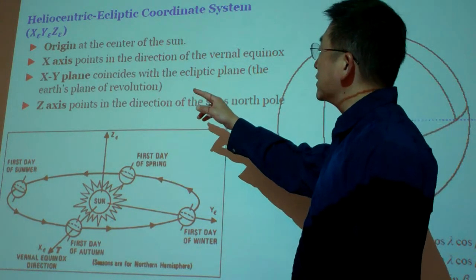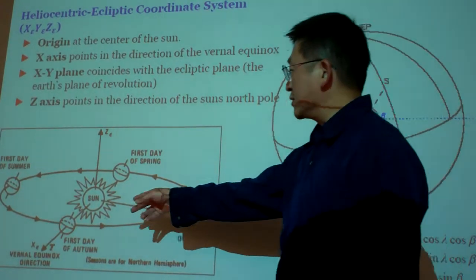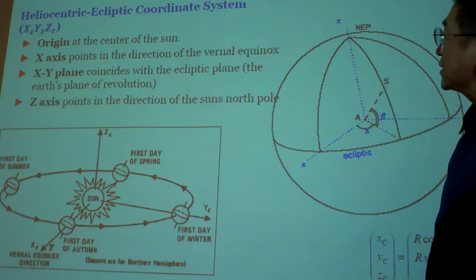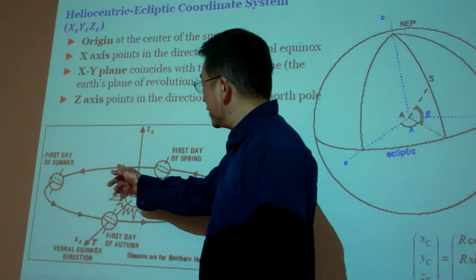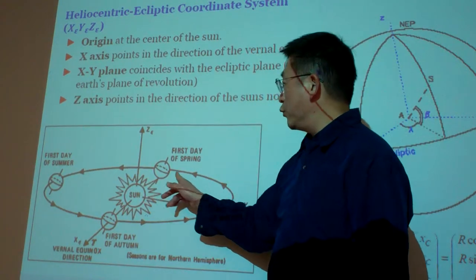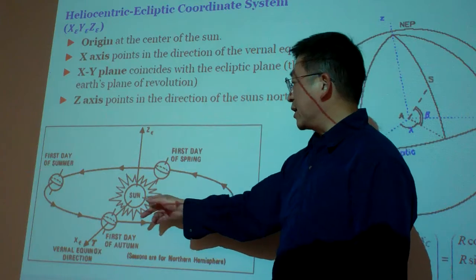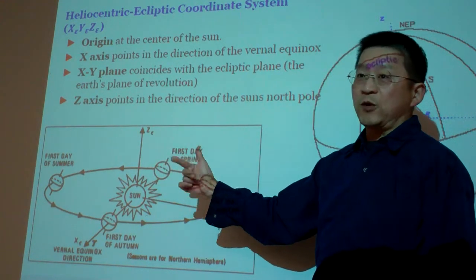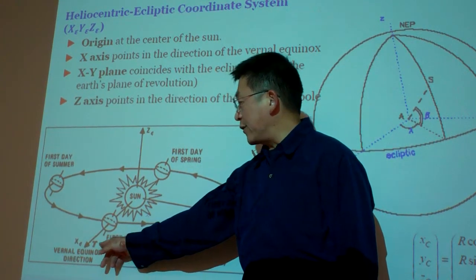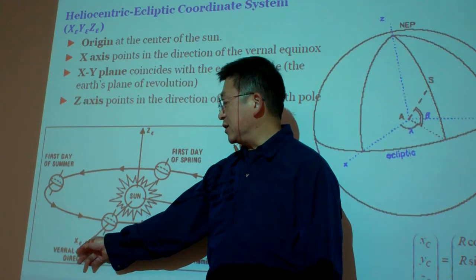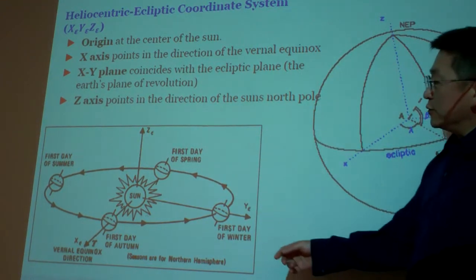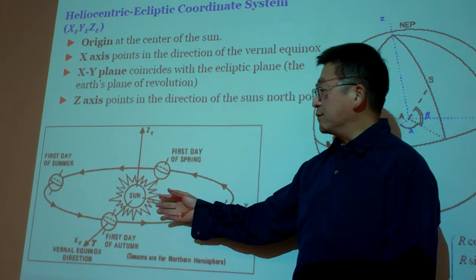The next one is the sun-based system. Using the sun as the center, this is called the heliocentric ecliptic coordinate system. It uses the ecliptic plane — that is the orbital plane of the Earth around the sun — as the base plane. The IJ coordinate system lies on this plane, and K is defined using the right-hand rule. In this coordinate system, we point the I-axis to the vernal equinox direction, basically pointing to the constellation of Aries.